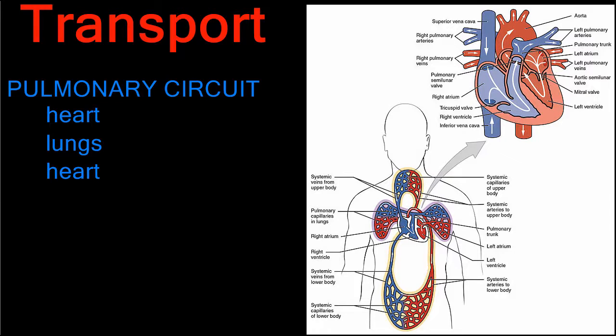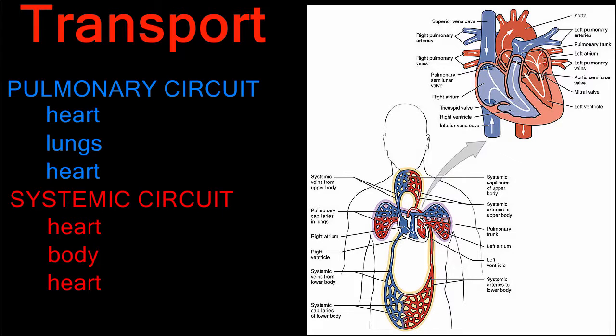This is where the pulmonary circuit ends and the systemic circuit begins. The systemic circuit travels from heart to body and back to heart again. The heart has just received blood from the pulmonary veins into the left atrium.